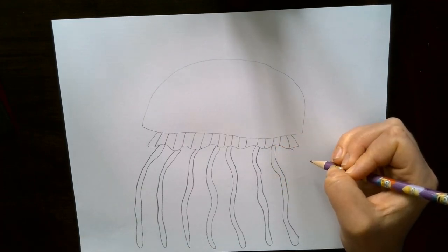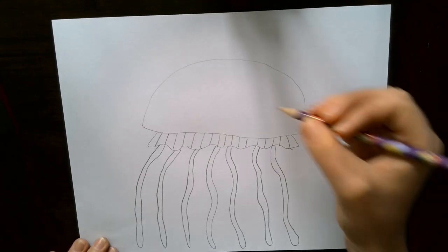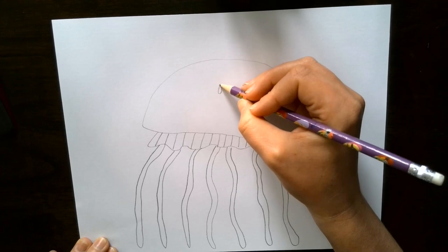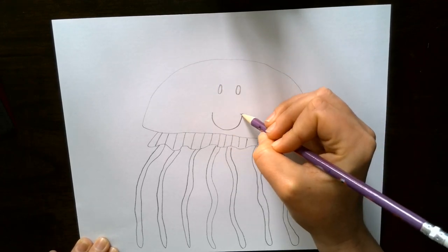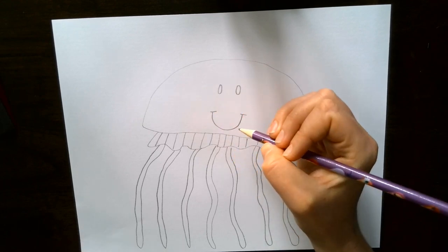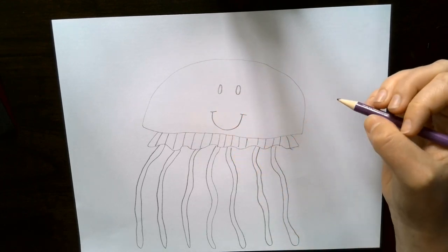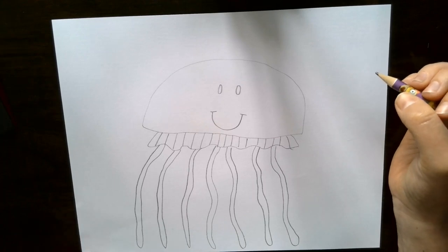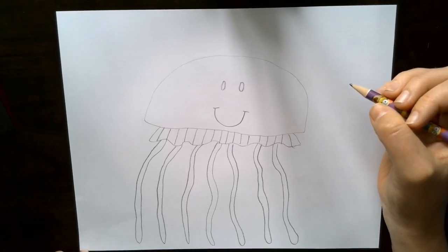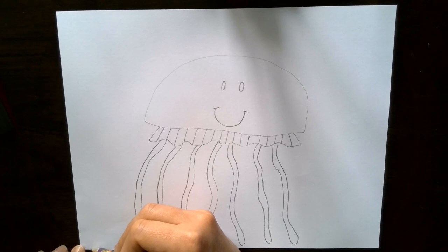And my next step, this part isn't as realistic, but I want it to be a happy jellyfish. So I'm going to add some eyes and a little happy smile like that. Now I'm going to add a couple of details in the background that are just some things that sometimes we see underneath the ocean. So you can decide what you'd like to add.